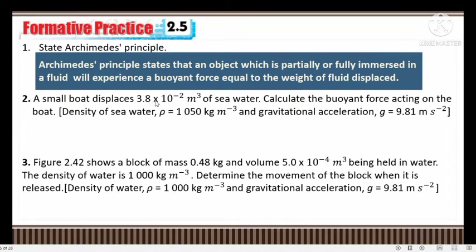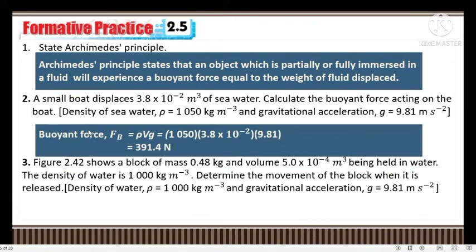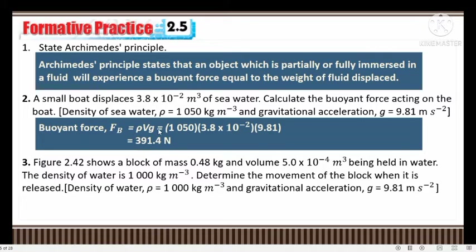Number 2: a small boat displaces 3.8 × 10⁻² m³ of sea water. Calculate the buoyant force acting on the boat. Formula: Fb = rho·V·g. Remember, buoyant force equals weight of liquid displaced, so rho must be the density of the liquid, V is the volume of liquid displaced. Substituting: density of liquid = 1050, volume of liquid displaced given, times g. The answer is 391.4 N.